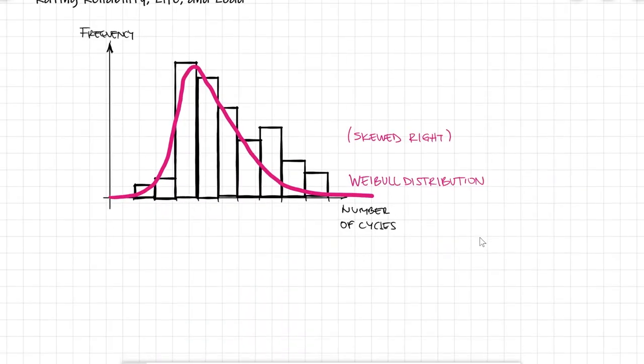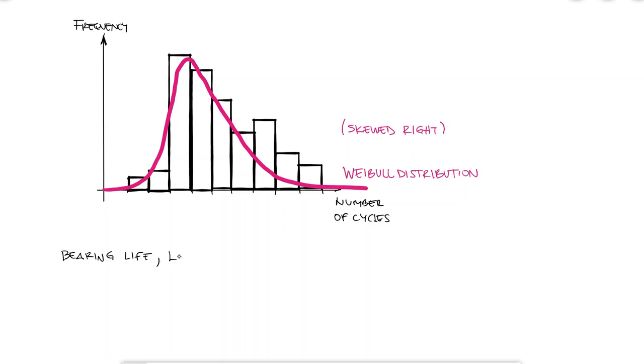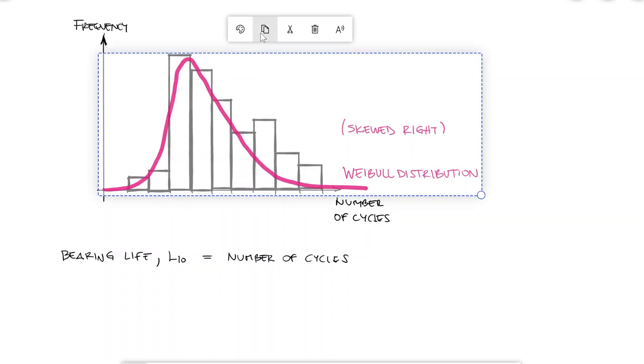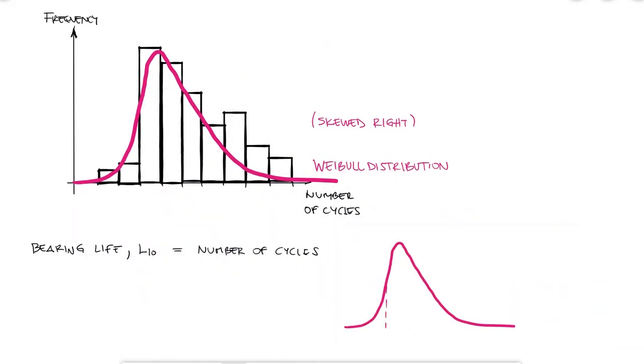The value that manufacturers report for the bearing life L10, which is the number of cycles for which only 10% of samples have shown signs of fatigue failure and therefore 90% are still okay, should correspond to the value for which the area under the probability function curve from that value upward is exactly 90%.